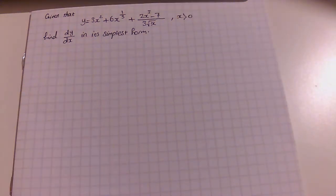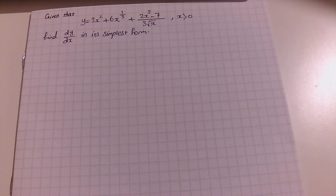Given y equals 3x squared plus 6 times x over x to the power of one third, plus 2x to the 3 minus 7 over 3 root x, where x is greater than 0. Find dy over dx in simplest form.